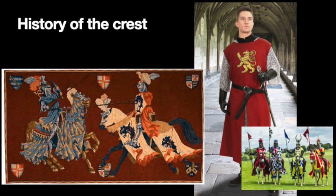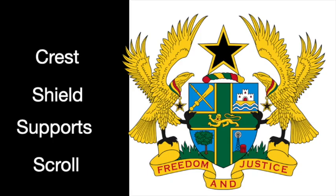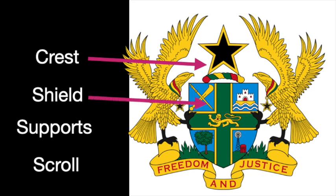So we're going to design a personal crest that represents ourselves and is a personal expression of ourself. A crest is a composition of four main parts. The first part is the crest at the top — it's like a hat or helmet that's usually on the top portion of the crest. The main portion is a shield that goes in the center.